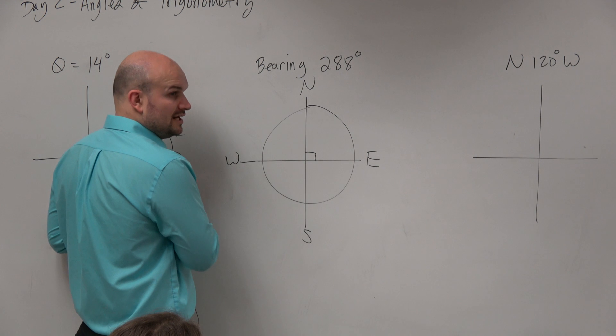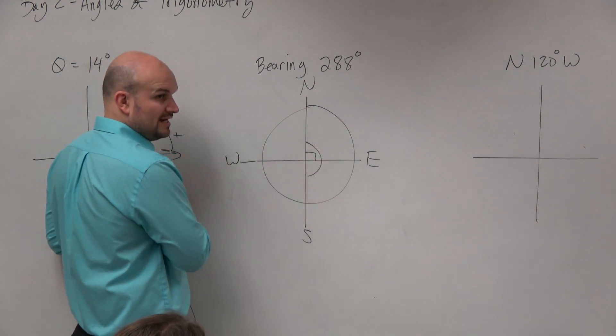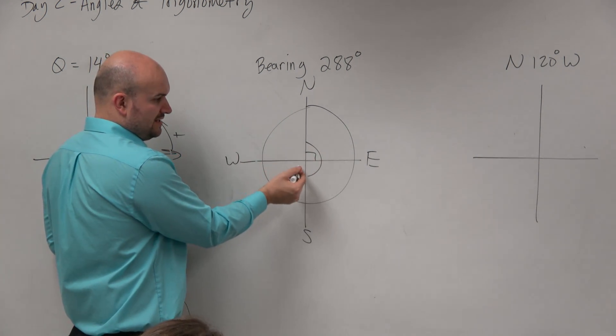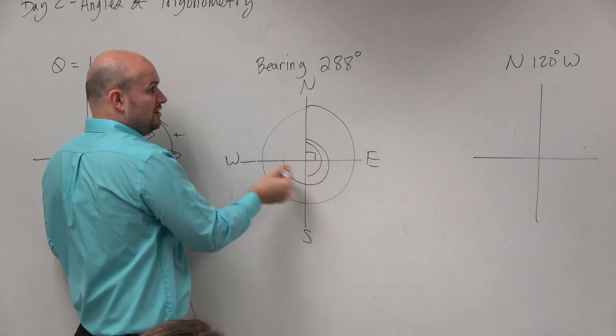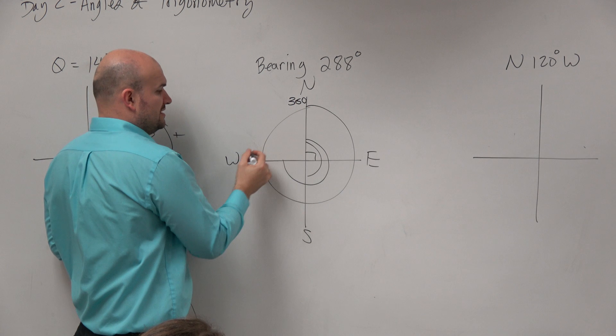So I know from here to here is 90 degrees. Here to here is 180. If I add 90 to 180, that's going to take me to 270. I'm just trying to get to 288. I know all the way around is 360. This is 270.